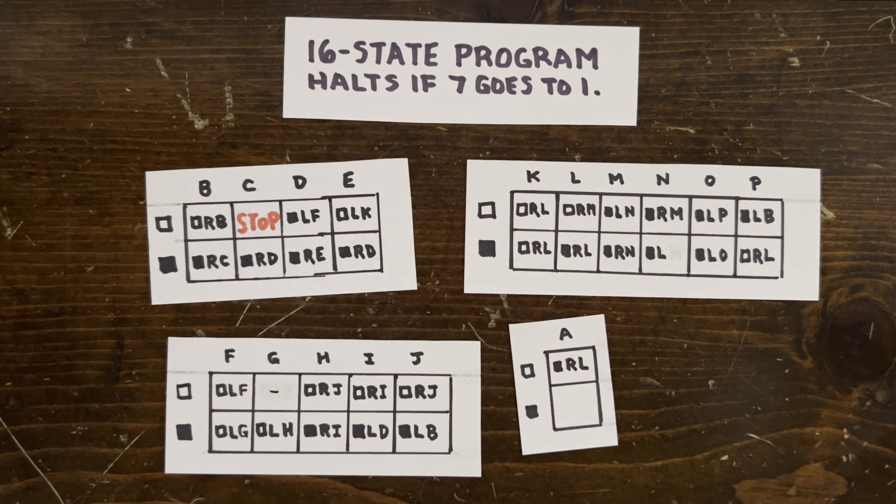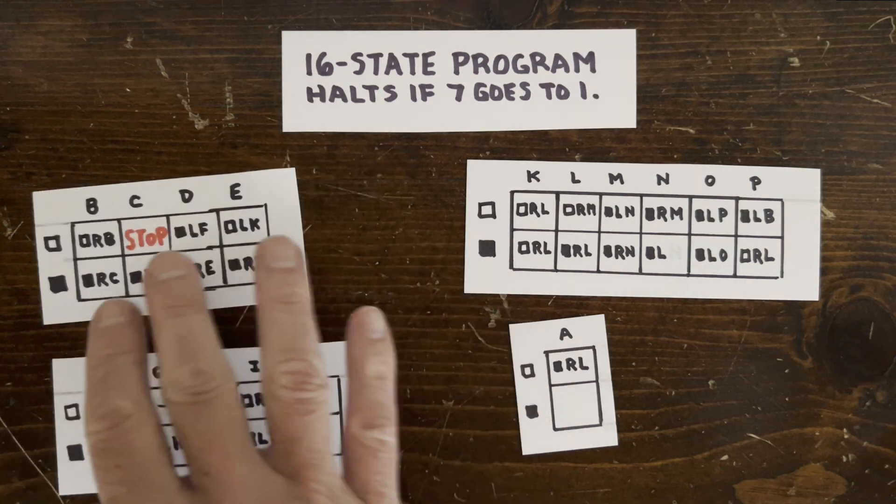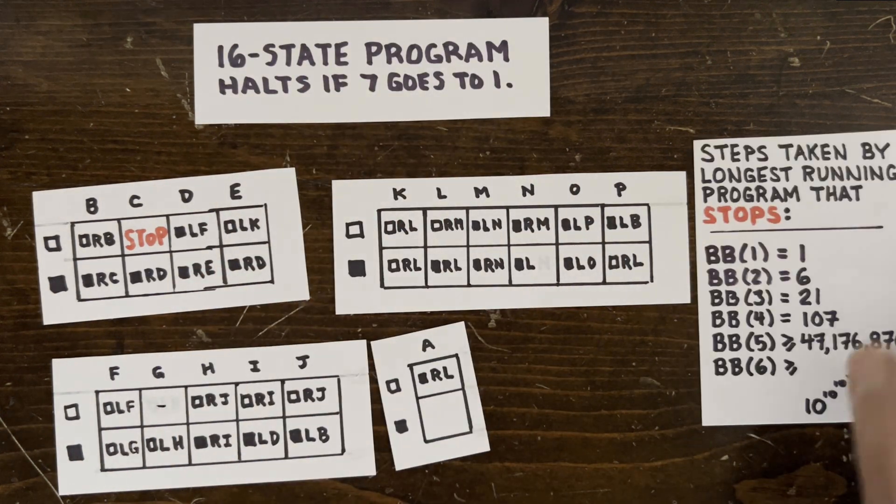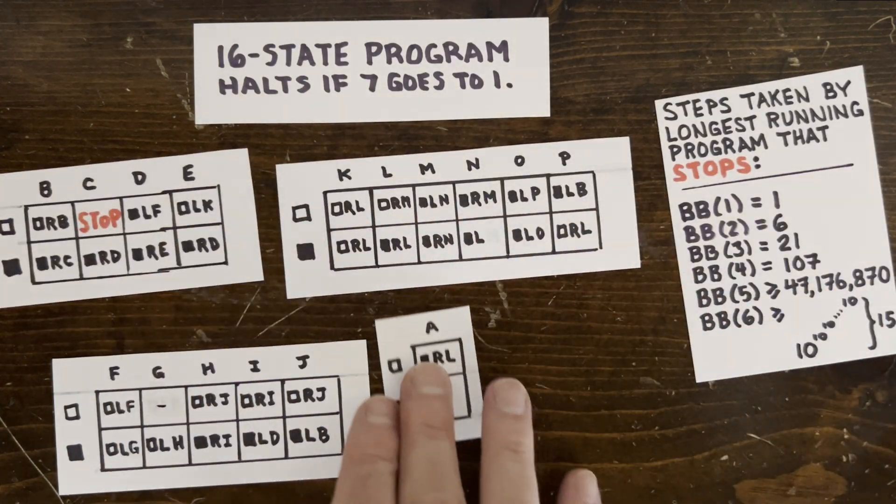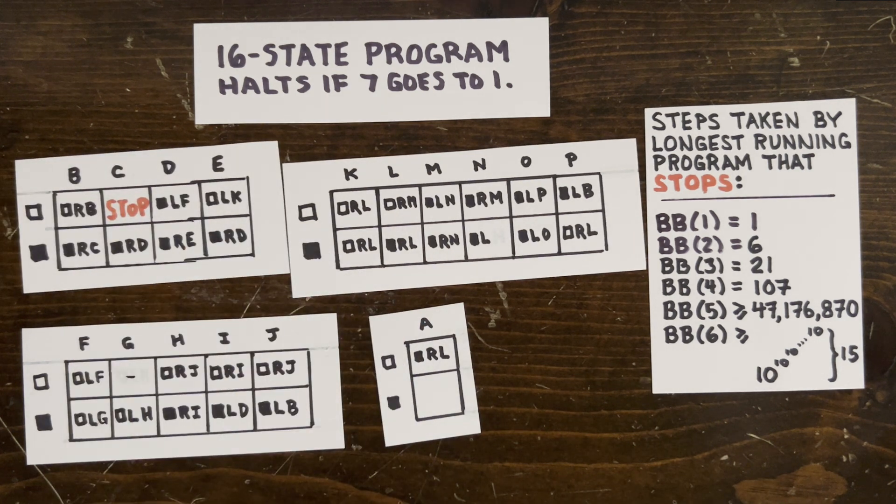If this machine were still running at step BB(16), then we'd have confirmed that 7 will never reach 1. Is it possible to build a smaller machine, like with 5 states, to do the same thing? Then we might only have to run it for 47 million steps.